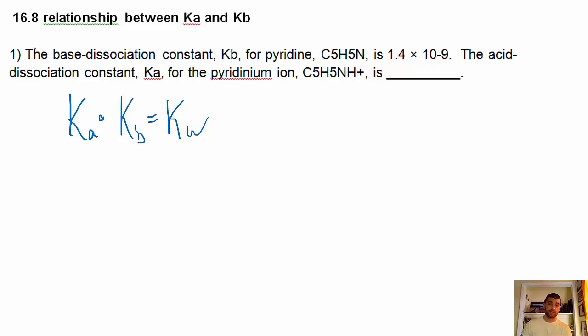So, piece of cake. We know Kw is 10 to the minus 14, so we know Kw. They give us the Kb, so we've got to figure out Ka. So we know Ka equals Kw over Kb.